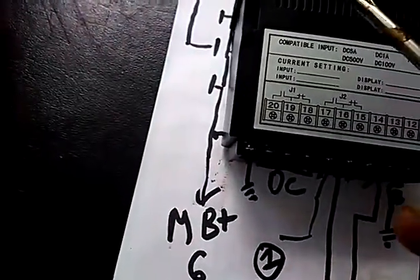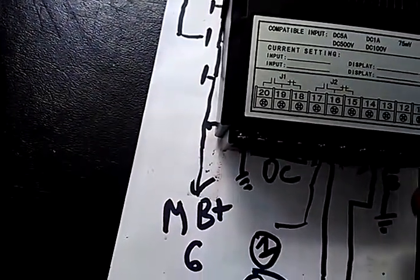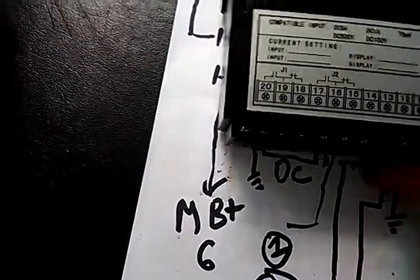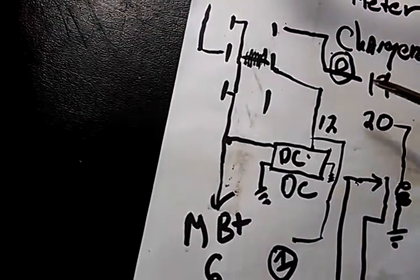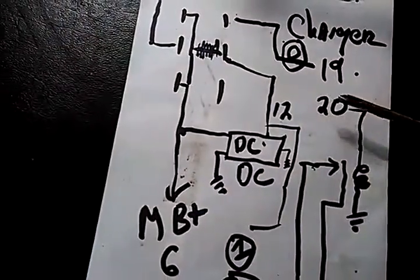So when the relay inside is off, then our charger will be off. So I have it going through the light bulb so we can see that it's on, goes through the meter, and then out through the coil of the relay.